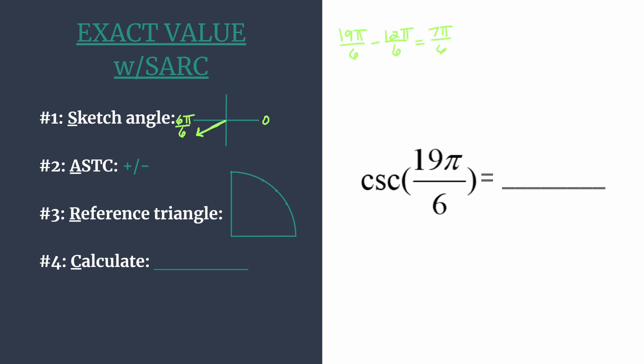Okay, now let's decide if our final answer should be positive or negative. And to do this, we use ASTC. That's the A in SARC. And that is an acronym that tells us which trig functions are positive in each quadrant working around from quadrant 1. So they're all positive in quadrant 1. Sine and its reciprocal cosecant are the only ones positive in 2. Tangent and cotangent in 3. And cosine and secant are the ones positive in quadrant 4.